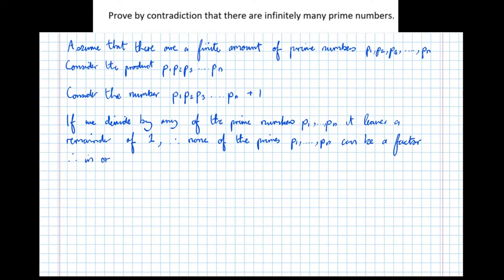Therefore, in order to get the prime number decomposition of P1, P2, P3, multiplied together all the way up to Pn,